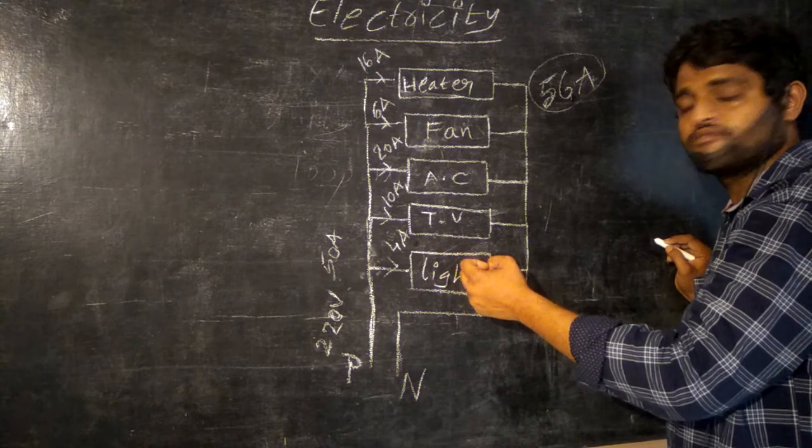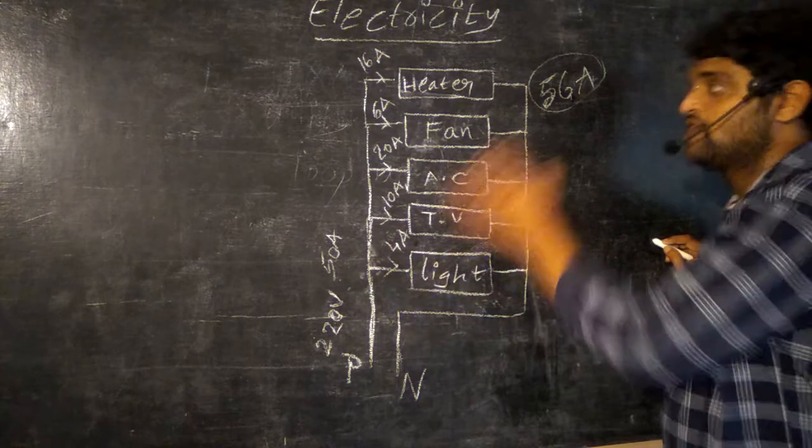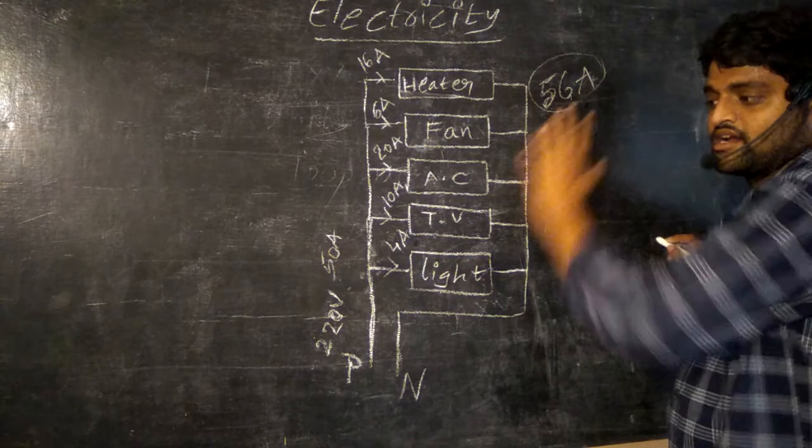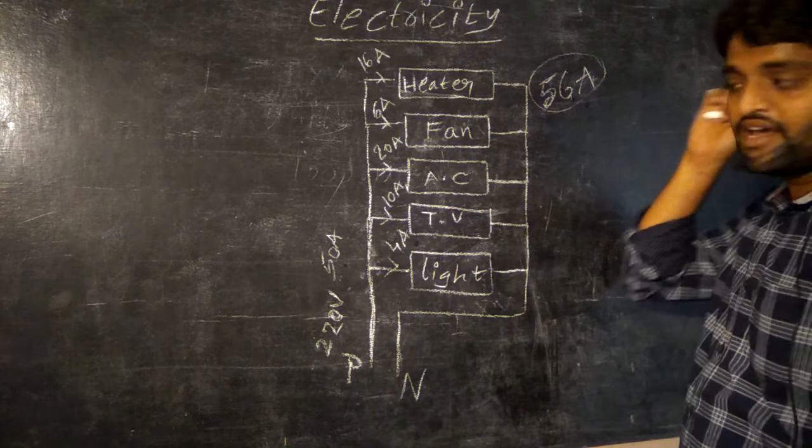So the devices have to perform, they require 56 amperes of current. What will happen then? Overload should happen.